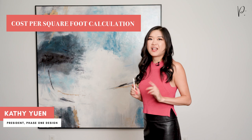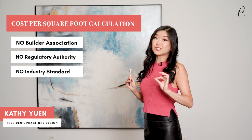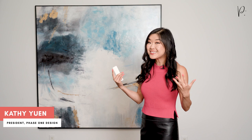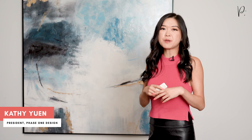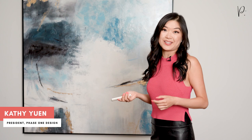So let's take a look at how to use this cost per square foot term properly. Number one: know that there is no standard way of calculating cost per square foot. There is no builder association, regulatory authority, or industry standard which dictates how cost per square foot is calculated. Everyone out there is calculating this number differently. There isn't necessarily a right way or a wrong way to calculate this number. What is important to remember is that there is no standard way of calculating cost per square foot. It all lies in the follow-up questions.